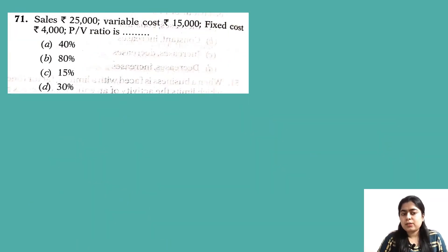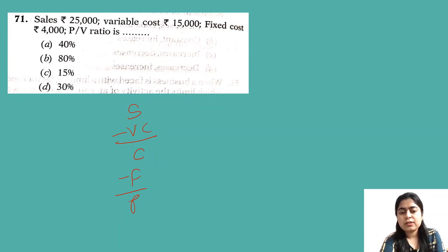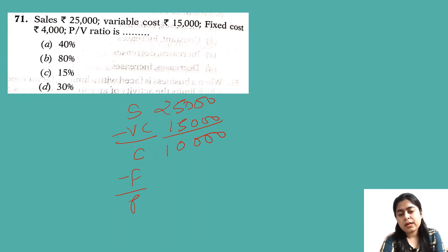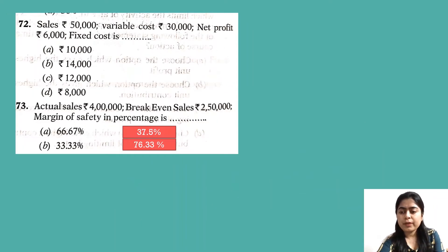Question: Sales is 25,000, variable cost 15,000, fixed cost 4,000 — calculate PVR. Sales minus variable cost: 25,000 minus 15,000 gives contribution of 10,000. PVR = 10,000 divided by 25,000 into 100 = 40%. The answer is option A: 40%.